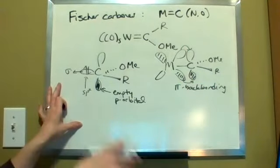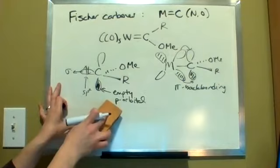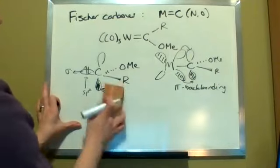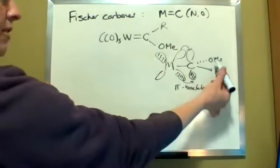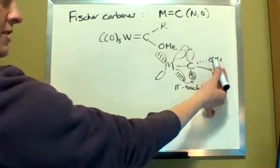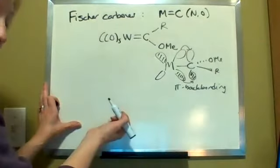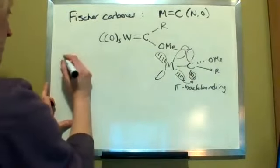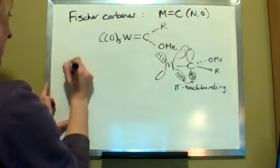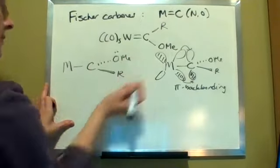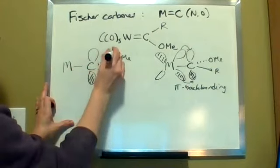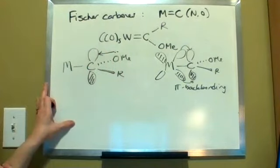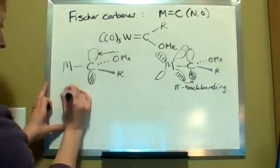Now you can also have - because you have over on this heteroatom another source of electrons that can donate into that empty p orbital, and you see that as well. So what you could have in that case is electrons being donated from the oxygen - this is pi donation from oxygen to carbon.